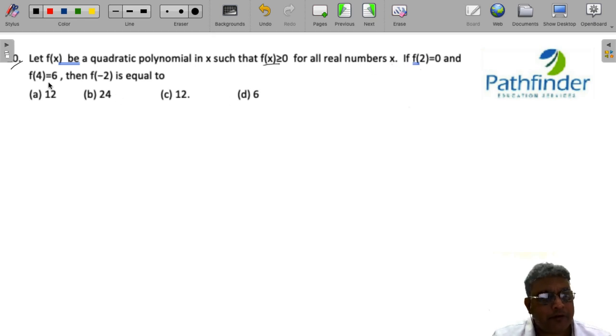When f(2) is equal to 0, f(4) is equal to 6, then you got to calculate the value of f(-2).